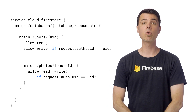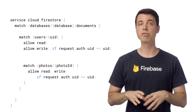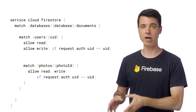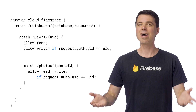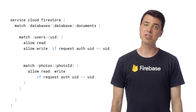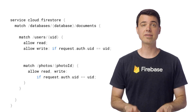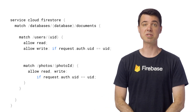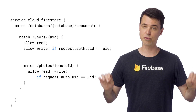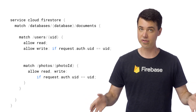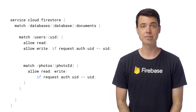Just one more little thing — I've been using the word variable to refer to the UID and photo ID wildcard strings. Well, that's not really the best word, because these variables can't be changed. The values are constant at the time of evaluation when a specific document is being read or written. There are no true variables in security rules. You can only use their values as is.